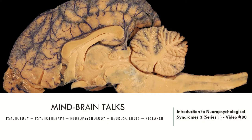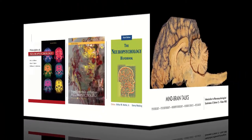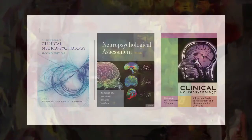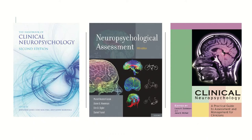But first, let's see the manuals I recommend to you today. The first is the Principles of Neuropsychology. The second is the Fundamentals of Human Neuropsychology. The third is the Neuropsychology Handbook. The fourth is the Handbook of Clinical Neuropsychology. The fifth is the Neuropsychological Assessment, and the sixth is the Clinical Neuropsychology.